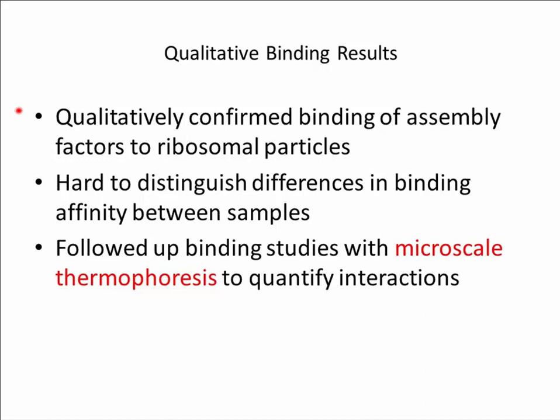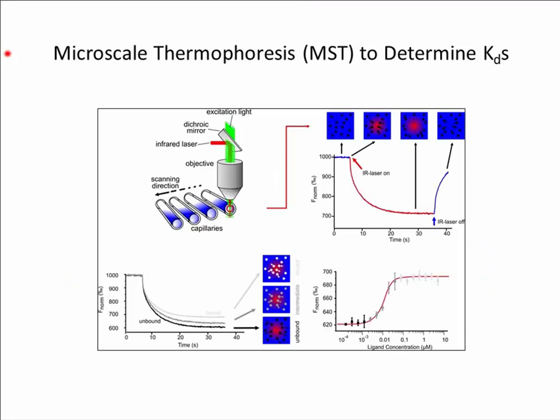After performing numerous binding assays that utilized significant sample and time consumption, we decided we needed a method that could better quantify these various ribosome-protein interactions. It was important that our method use minimal sample consumption because we were very limited in ribosome purification yields. For this, we turned to a technique known as microscale thermophoresis (MST), which monitors the directed movement of molecules in a temperature gradient. When a molecule is exposed to a temperature gradient, it tends to migrate away from the heated area based on its Soret coefficient, which is dependent on size, charge, and hydration shell. Any binding event will alter the Soret coefficient and thus affect the thermophoretic mobility of the particle.